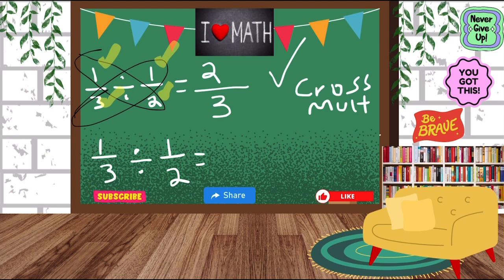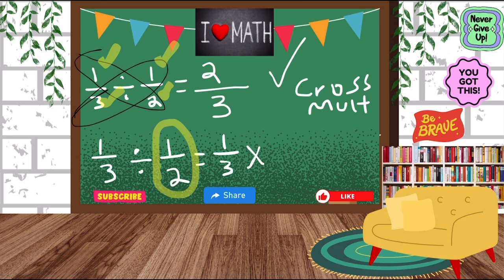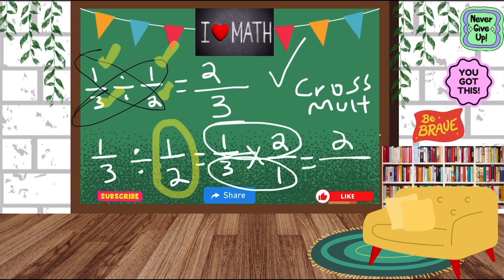So now let's look at the second one. Again, we have one third divided by one half. In this case, we are going to keep the first fraction like it is — the one third. And then you see that division symbol? We are going to change it into a multiplication symbol. But then the second fraction, one half, we're going to flip it. So the one is at the top, the two is at the bottom. We're just going to flip it and put the two at the top and the one at the bottom. And there you go. So we're just going to multiply — one times two is two, and then three times one is three.